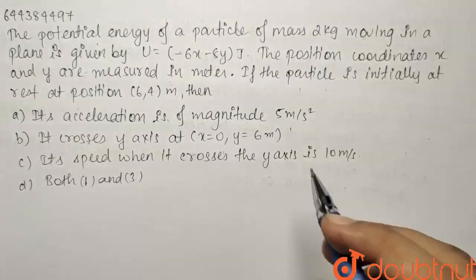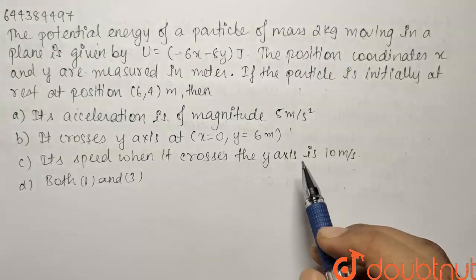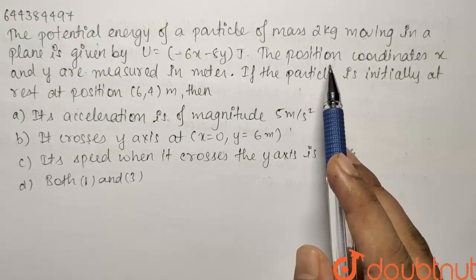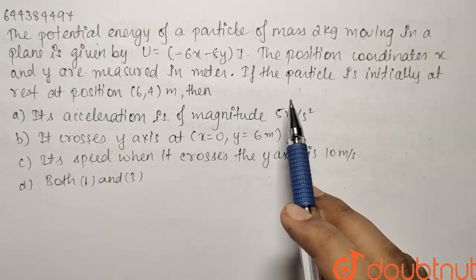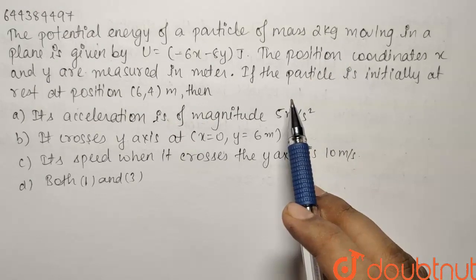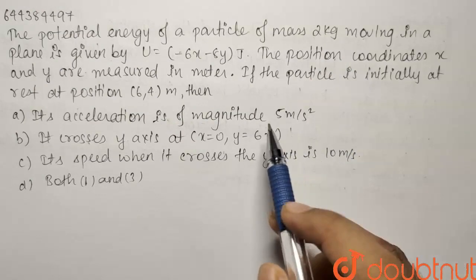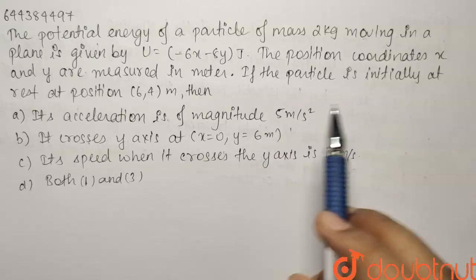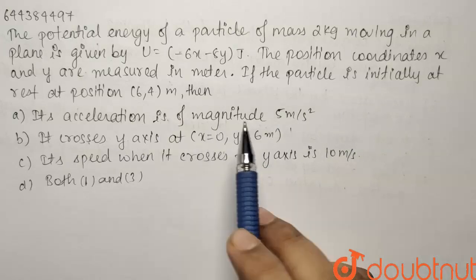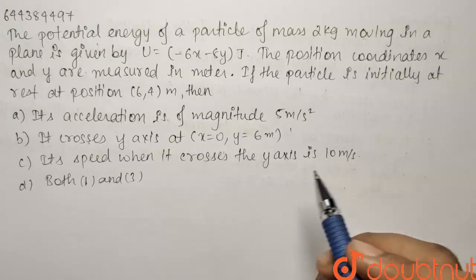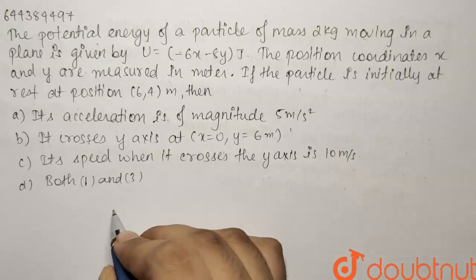Here we have a question from the topic work and energy. The potential energy of a particle of mass 2 kg moving in a plane is given by U equals minus 6x minus 8y joules. The position coordinates x and y are measured in meters. If the particle is initially at rest at position (6,4), then we have been given 4 options and we have to find out which of the following options are correct.